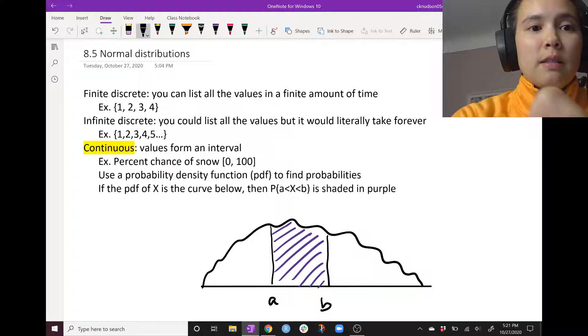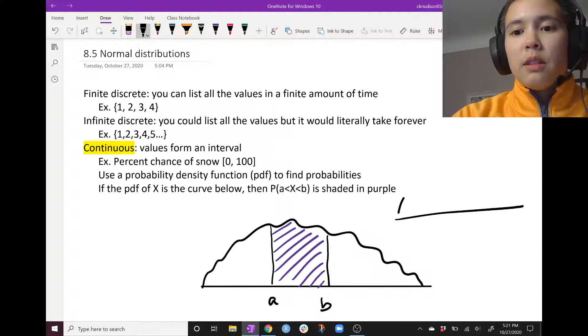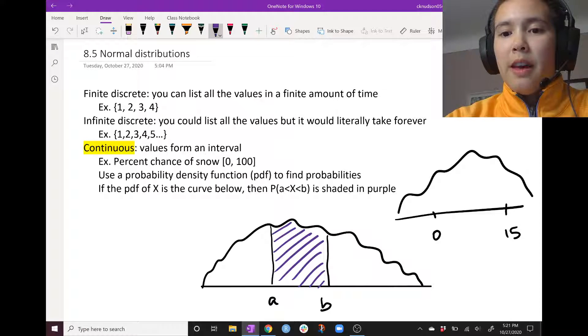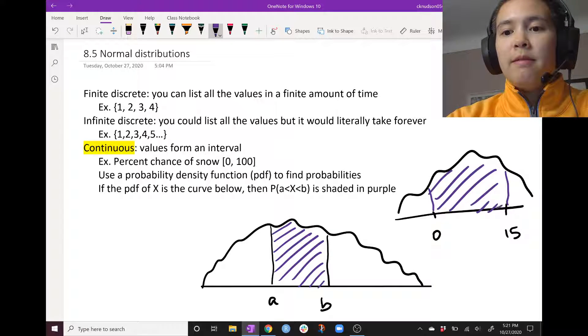As another one, let's do between 0 and 15. The probability that y is between 0 and 15 is that area there.